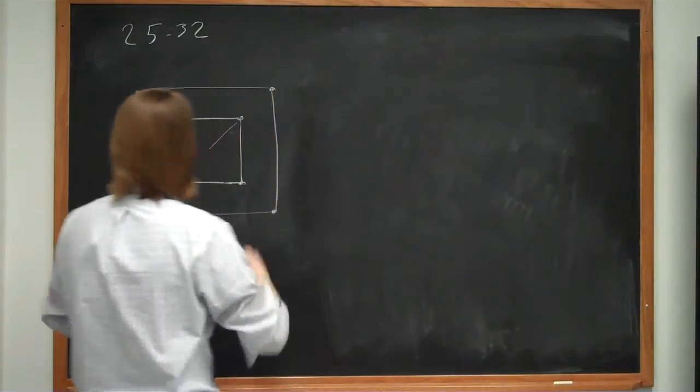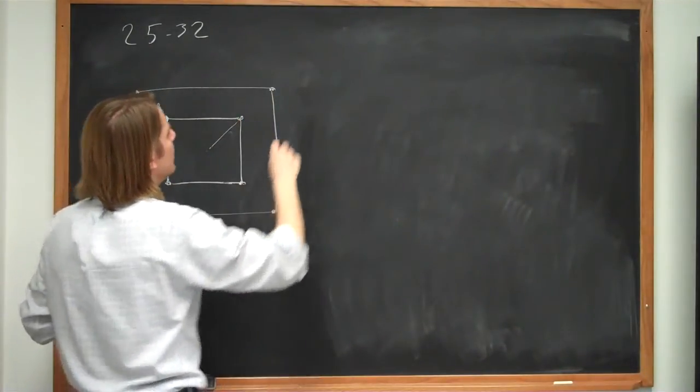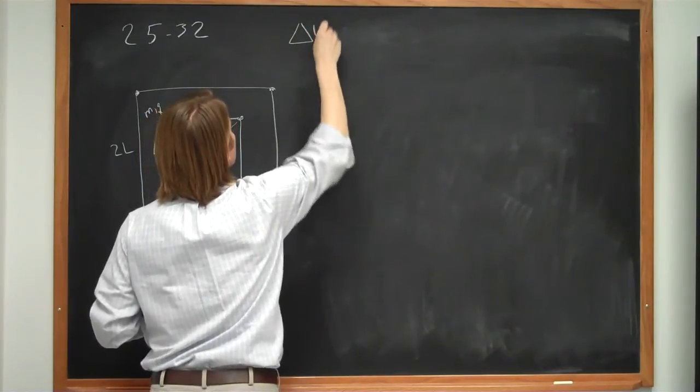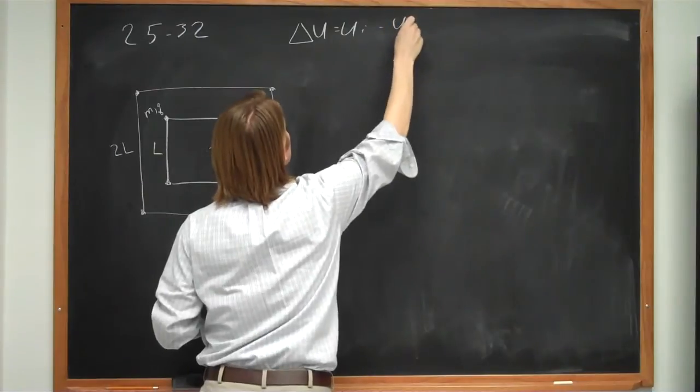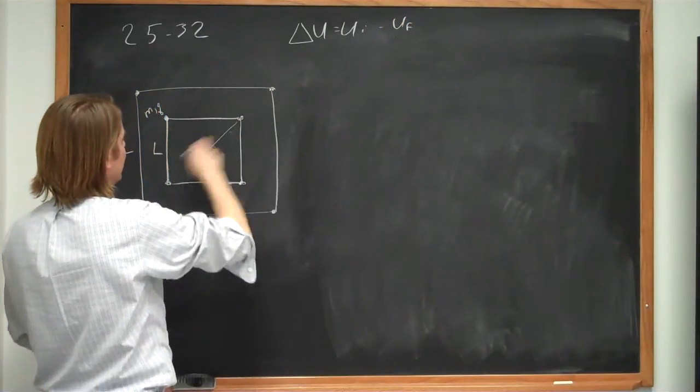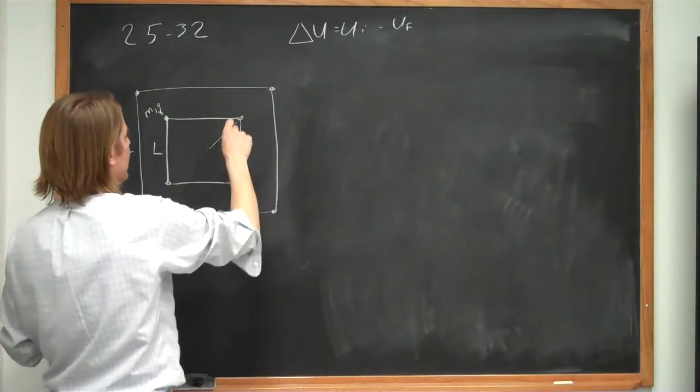So the total potential energy for the original square is what? Delta U is going to be U initial minus U final. U in the small square, U in the big square. So for the initial, we have to add up all the pairs. So how many pairs are there?